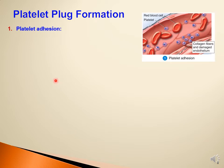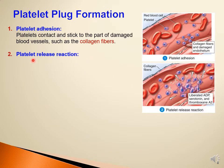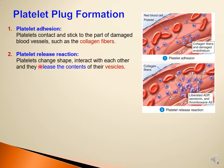For platelet plug formation, platelets first adhere to the site of injury where collagen fibers and damaged endothelium are exposed. Platelets circulating in the blood contact and stick to the damaged blood vessel at the collagen fibers. Then the adhered platelets release the contents of their granules — this is called the platelet release reaction. Platelets change shape, interact with each other, and release contents of their vesicles.